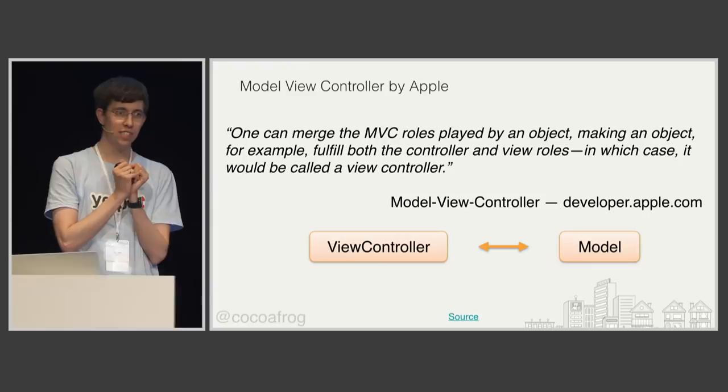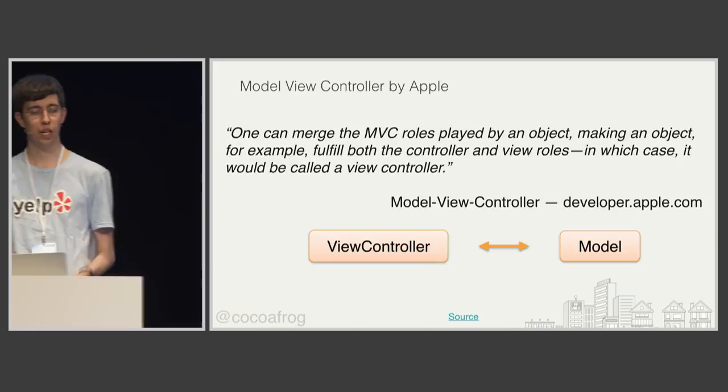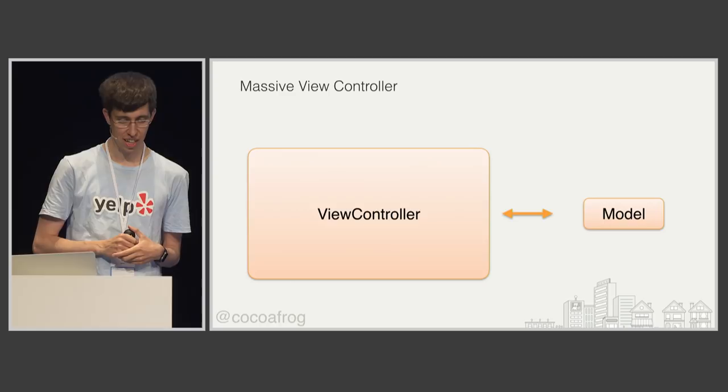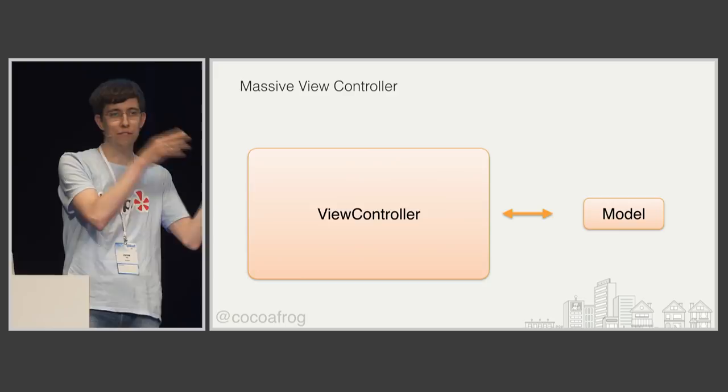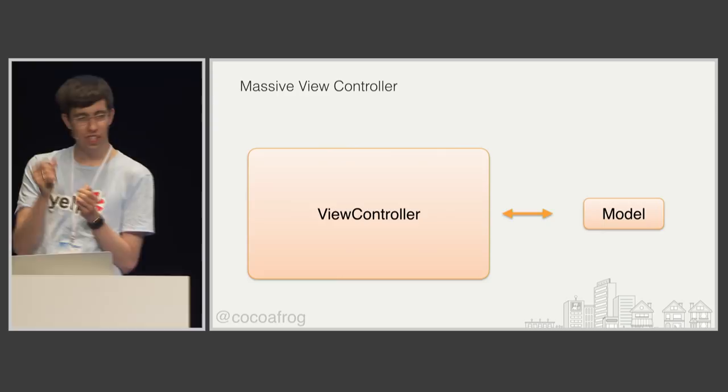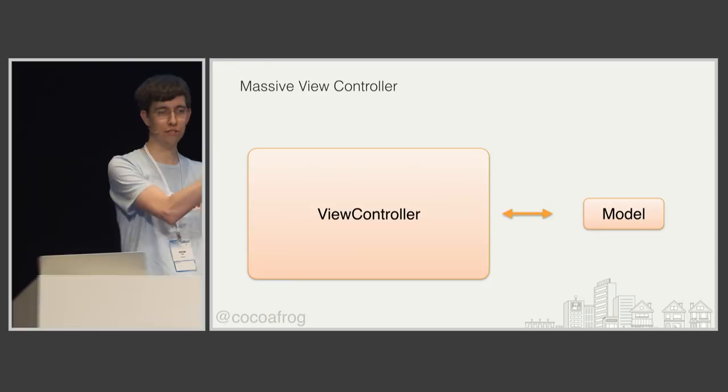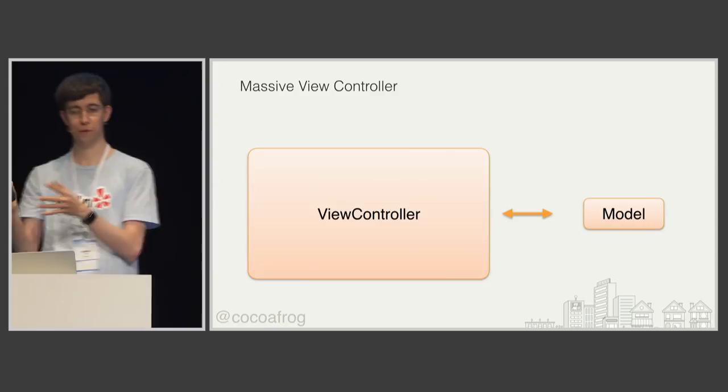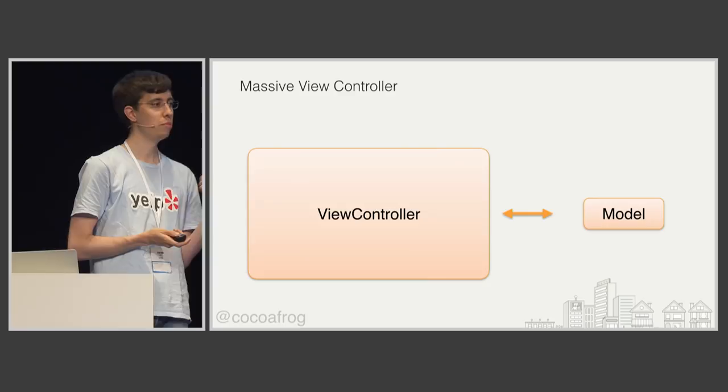As models are usually relatively small and dumb, that means everything else ends up in the view controller, making it pretty big and massive. This is why MVC is often joked to mean 'Massive View Controller.' But I don't think that's a fair criticism of Model-View-Controller — there's nothing in MVC that has to lead to that. You can use MVC very well and still avoid massive view controllers.